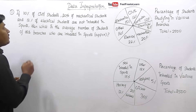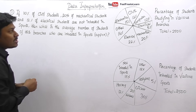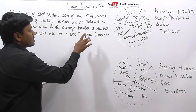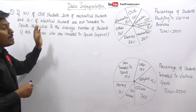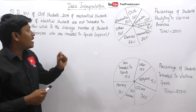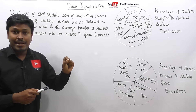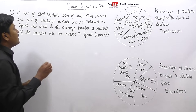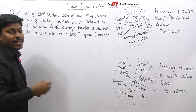Question number one: if 10% of civil students, 20% of mechanical students, and 12% of electrical students are not interested in sports, then what is the average number of students of these branches who are interested in sports? We need to find how many students are interested in sports in civil, mechanical, and electrical departments, then calculate the average.